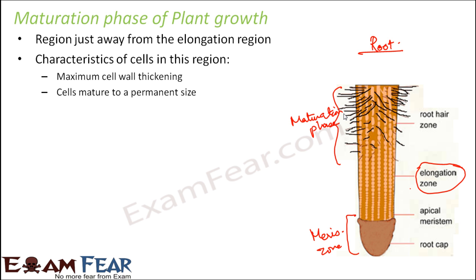Consider the different cells present in a plant — for example, in the phloem you have companion cells, parenchyma cells, and sieve tubes. If you look at the shape and size of each, they are very different from each other: some have an elongated nucleus, some have no nucleus at all. How do these cells get their particular shape and structure? First, cells are formed in the meristematic zone; then they elongate to cause some increase in length; and after that they differentiate and become mature to attain a permanent size and shape. These are the three phases of plant growth.